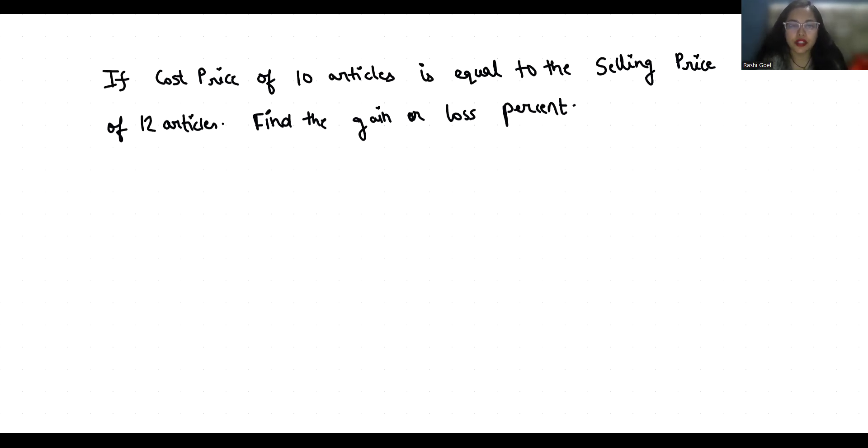So let's start with today's video solution. Cost price, I'm going to write CP of 10 articles is equal to SP, that means selling price of 12 articles. So we have to find the gain or loss.